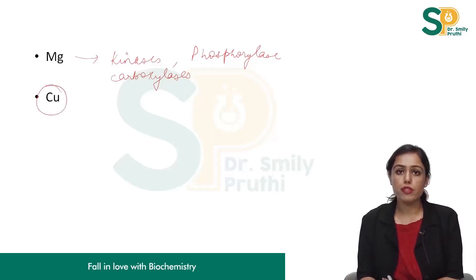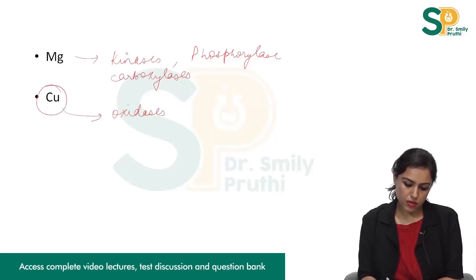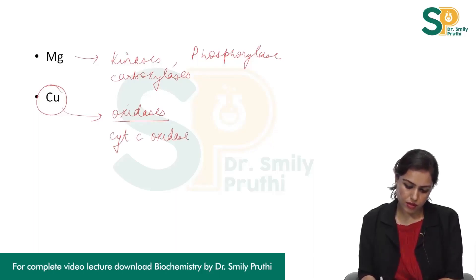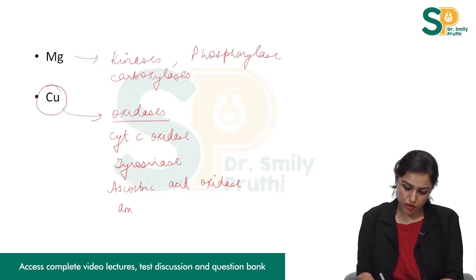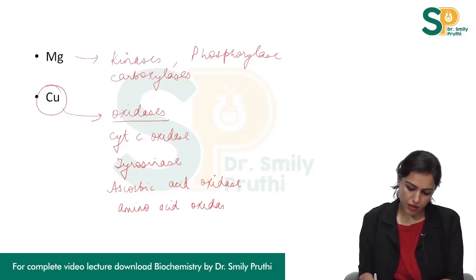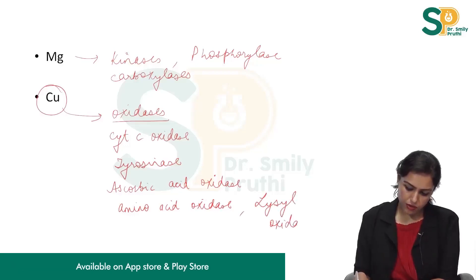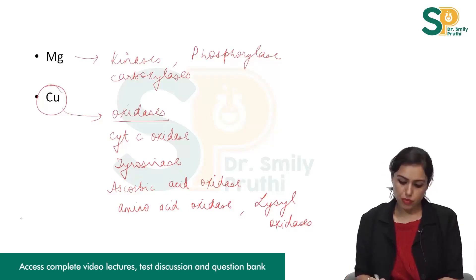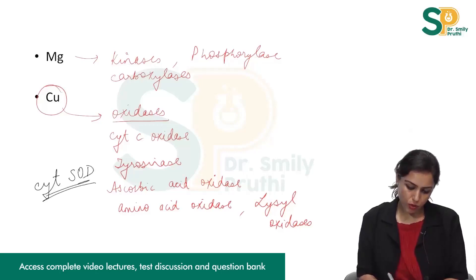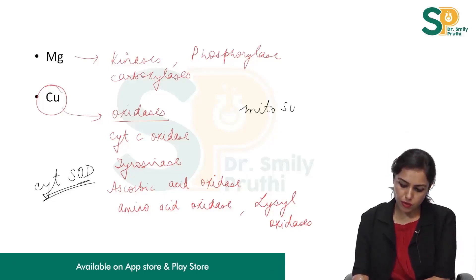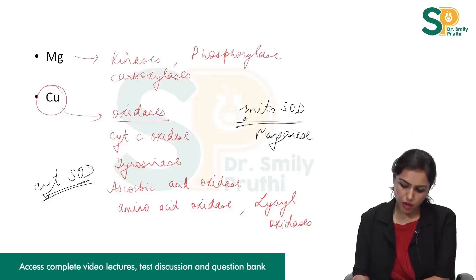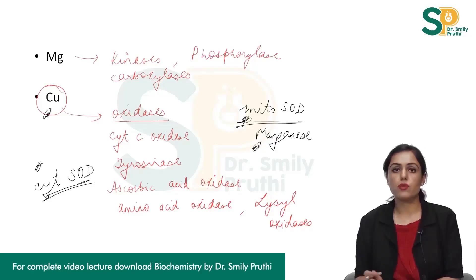Copper metal is required for all oxidases — cytochrome C oxidase, tyrosinase, ascorbic acid oxidase, amino acid oxidase, and lysyl oxidase all require copper. Cytoplasmic SOD (cytoplasmic superoxide dismutase) also requires copper. A mnemonic: M for mitochondria, M for manganese; C for copper, C for cytoplasm. So cytoplasmic SOD requires copper but mitochondrial SOD (mitochondrial superoxide dismutase) requires manganese.